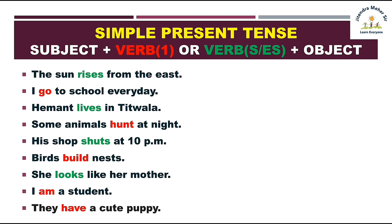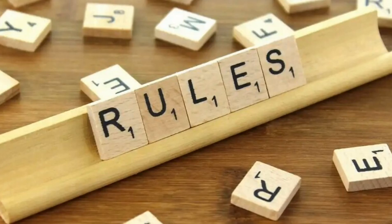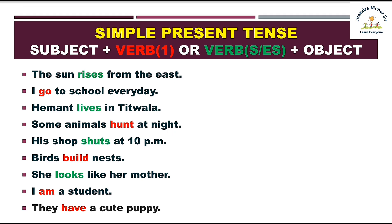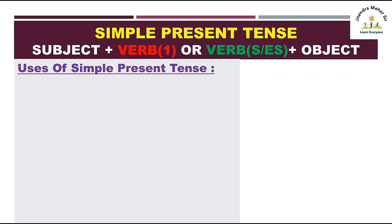Yahan hamne dekha kuch jagah par S/ES ka istamal hua hai aur kuch jagah par verb ka first form likha gaya hai. Jahan par I, we, you, they, aur plural noun aaye, wahan verb ka first form istamal hua. Aur jahan par singular he, she, it ka istamal hua hai wahan par S/ES ka istamal kiya gaya. Toh exactly simple present tense ka use kab karna hai, uske kuch rules dekhte hain — use of simple present tense.